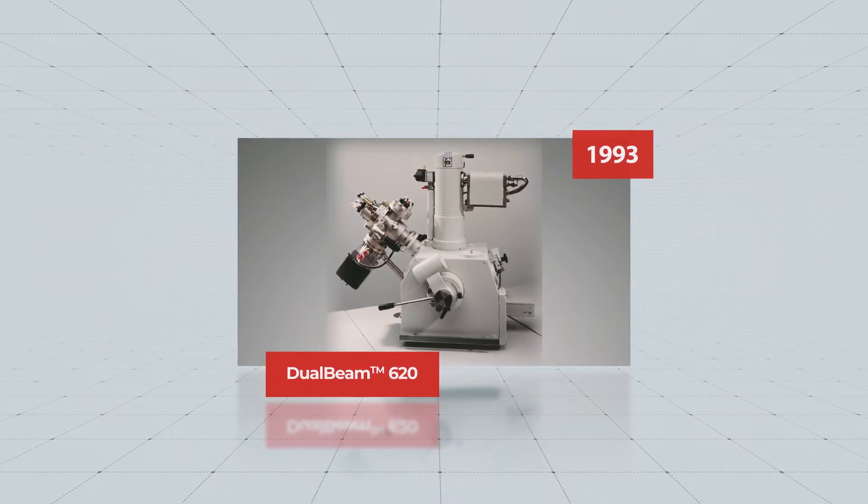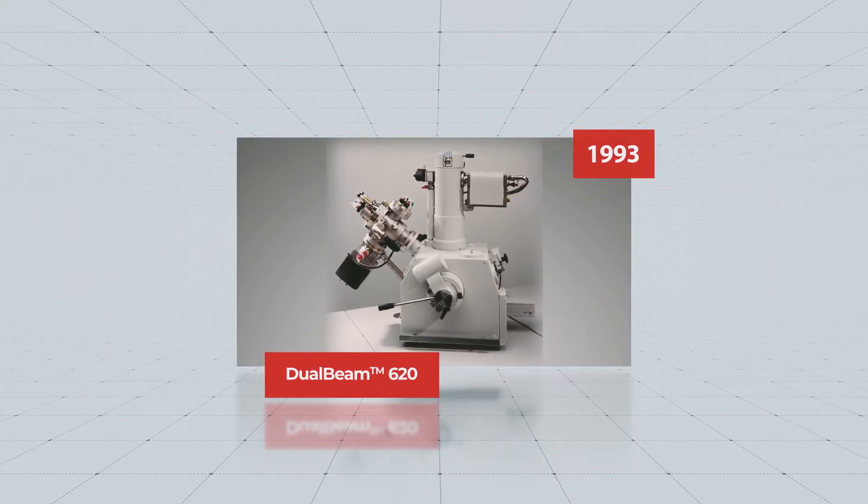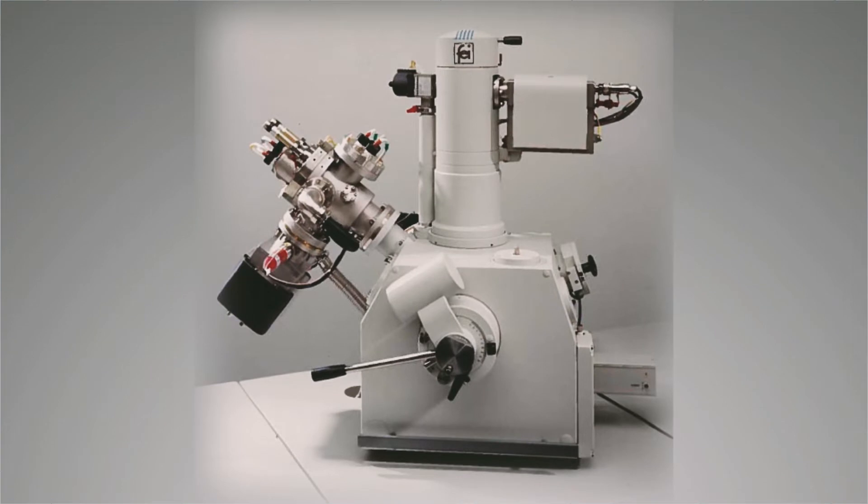In 1993, Thermo Fisher introduced the world's first dual beam system, the Dual Beam 620. This new instrument combined focused ion beam and scanning electron microscopes into a single platform.